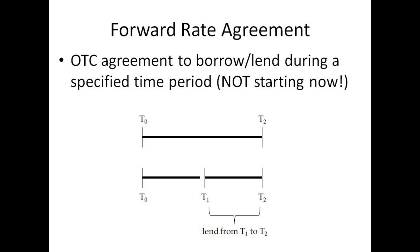A forward rate agreement is an over-the-counter agreement to either borrow or lend during a specified time period not starting now. If our FRA is to lend, it would be to lend from T1 to T2. We know the interest rate for a two-year bond from T0 to T2 and the one-year rate, so we can back out a reasonable rate to borrow or lend at for a future period. That is a forward rate agreement.